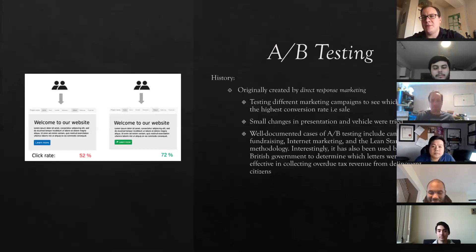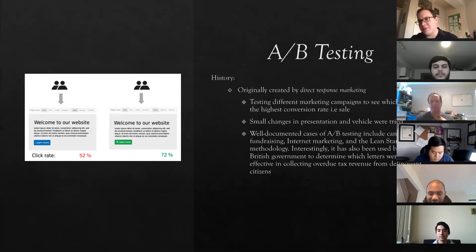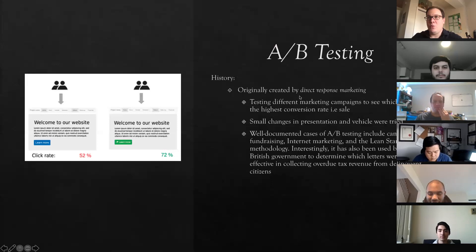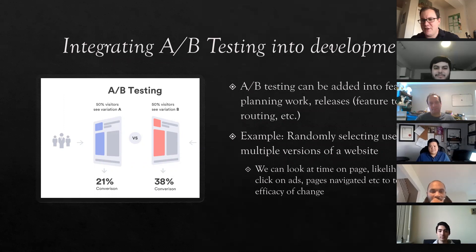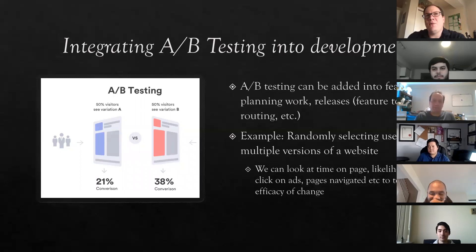The whole concept comes from marketing originally. Even before people could track things in emails, people would use different coupon codes to track how likely different marketing campaigns could be converted into a sale. We can obviously expand that into all kinds of things with technology. Facebook does this a lot — you can be using one version of Facebook while somebody else complains about a new change you can't even see. You can basically route traffic to different users and show them two different versions of the same website.